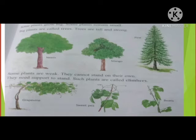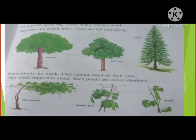Some plants are weak — they cannot stand on their own. They need support to stand — such plants are called climbers. यानि जो कई plants होते हैं, वो बहुत weak होते हैं, कमज़ोर रहते हैं. They cannot stand on their own — वो अपने support से नहीं खड़े रह पाते. उनको खड़े रहने के लिए support की ज़रूरत होती है. आपने देखा भी होगा कई plants को ऐसे. Such plants are called climbers. नीचे picture भी दी हुई है.